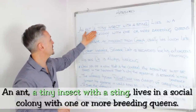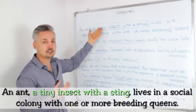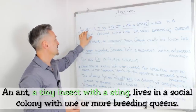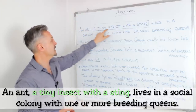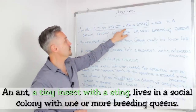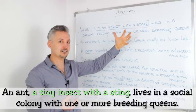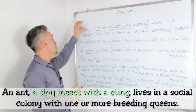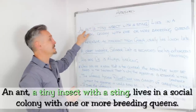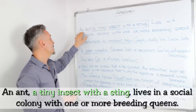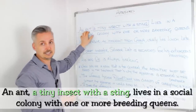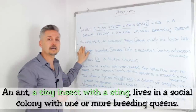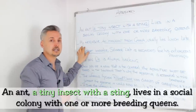So this is extra information that I give about an ant, and in this case, 'a tiny insect with a sting' is not essential in the sentence, but it describes or defines the subject, which is 'an ant'.